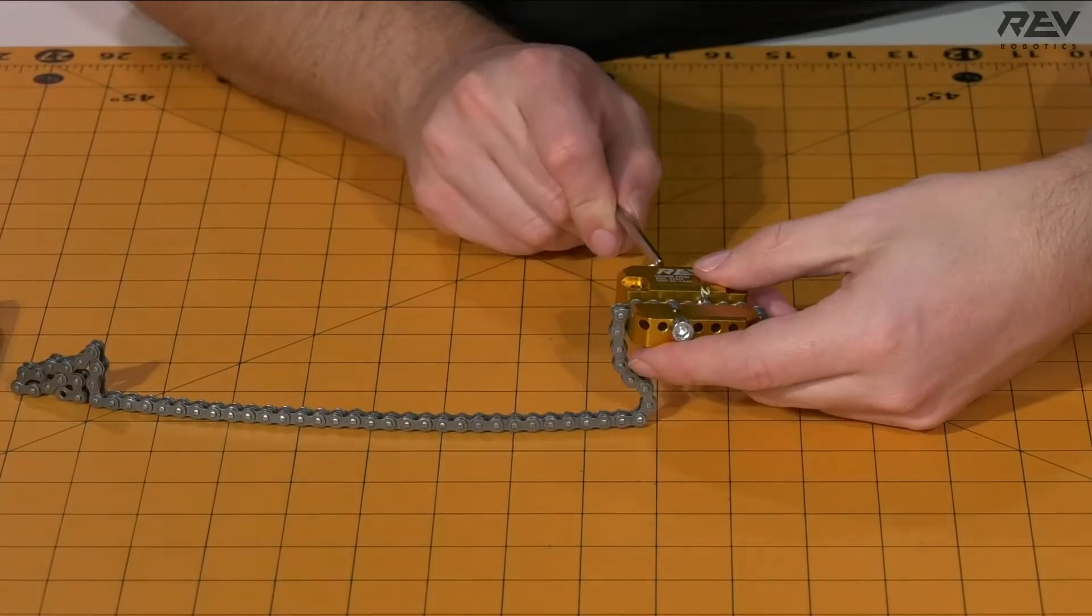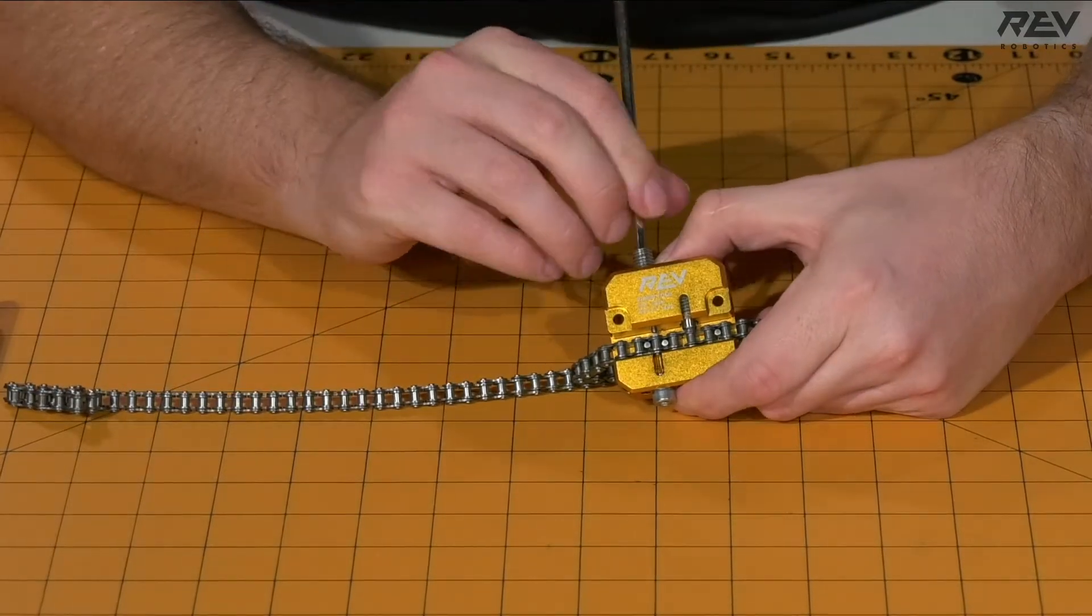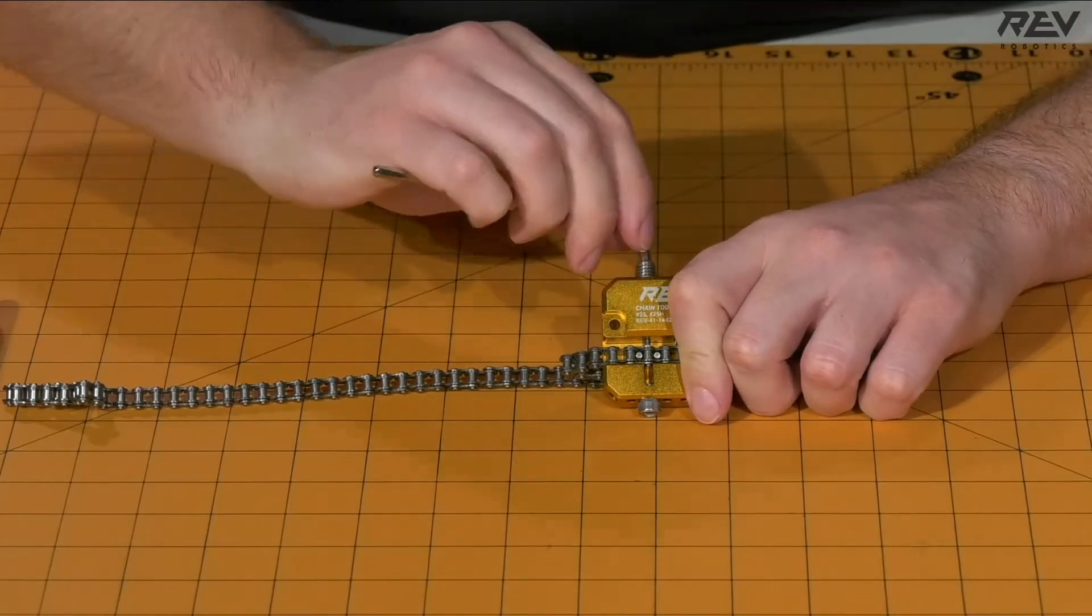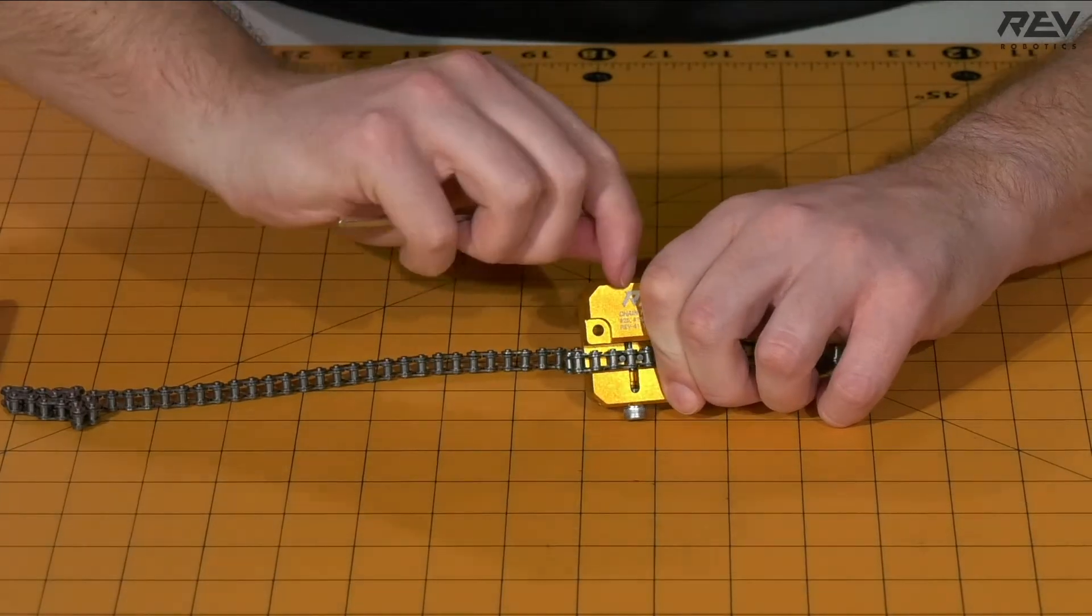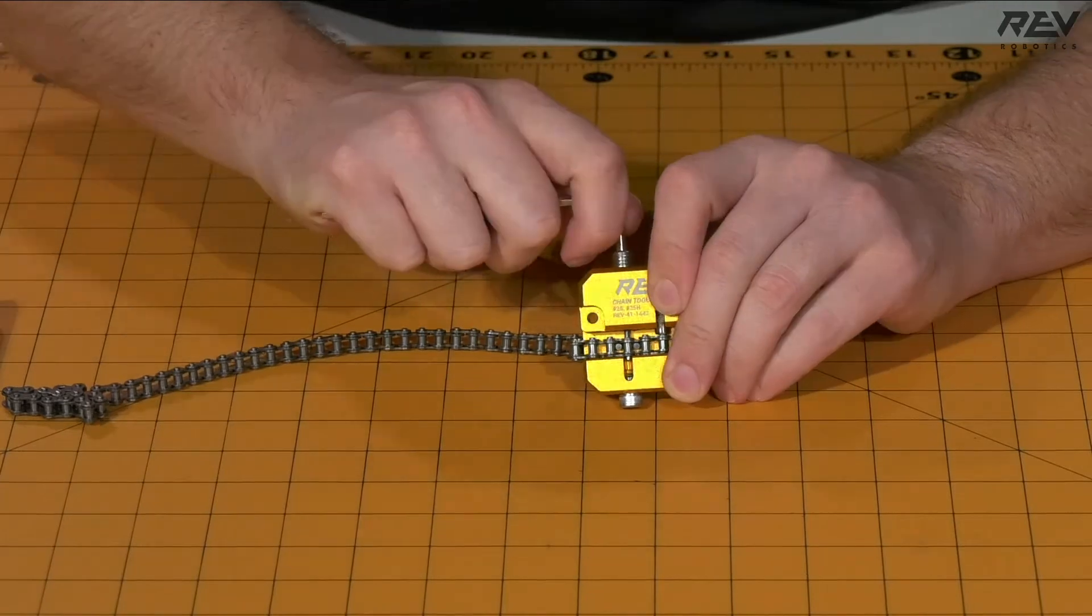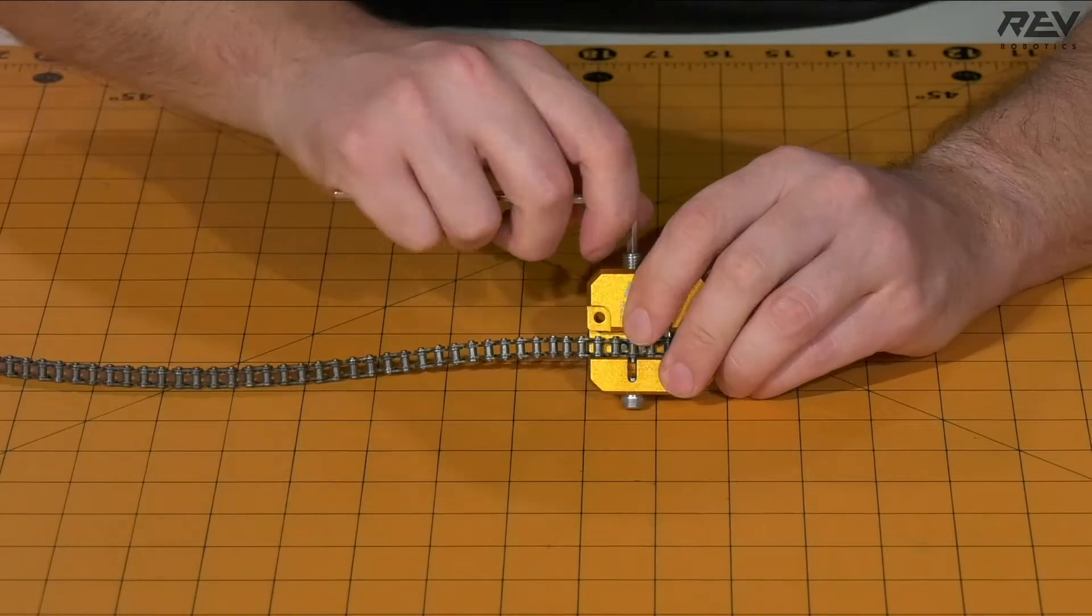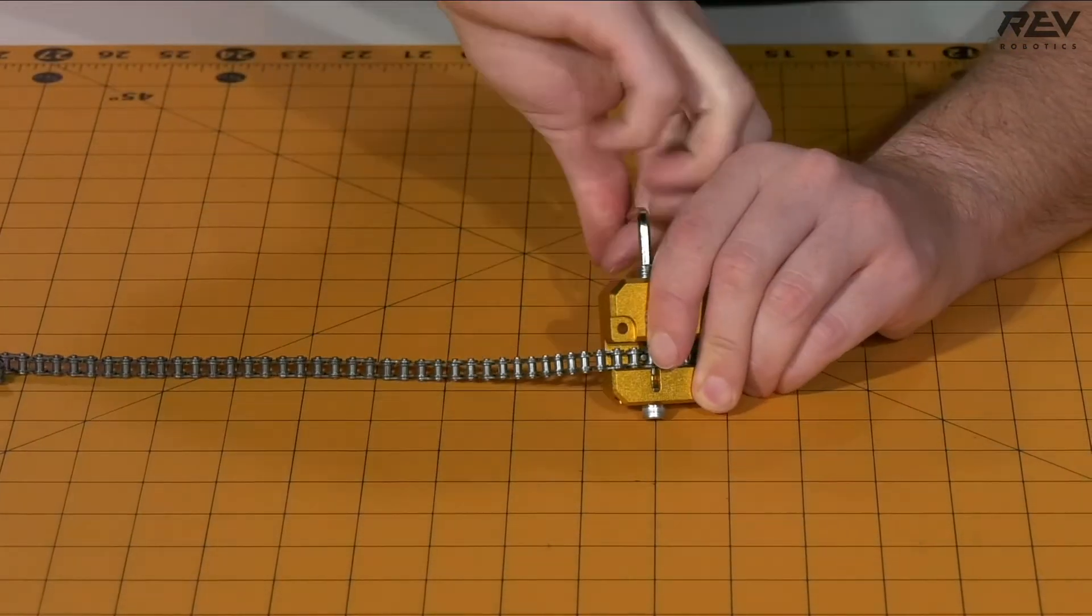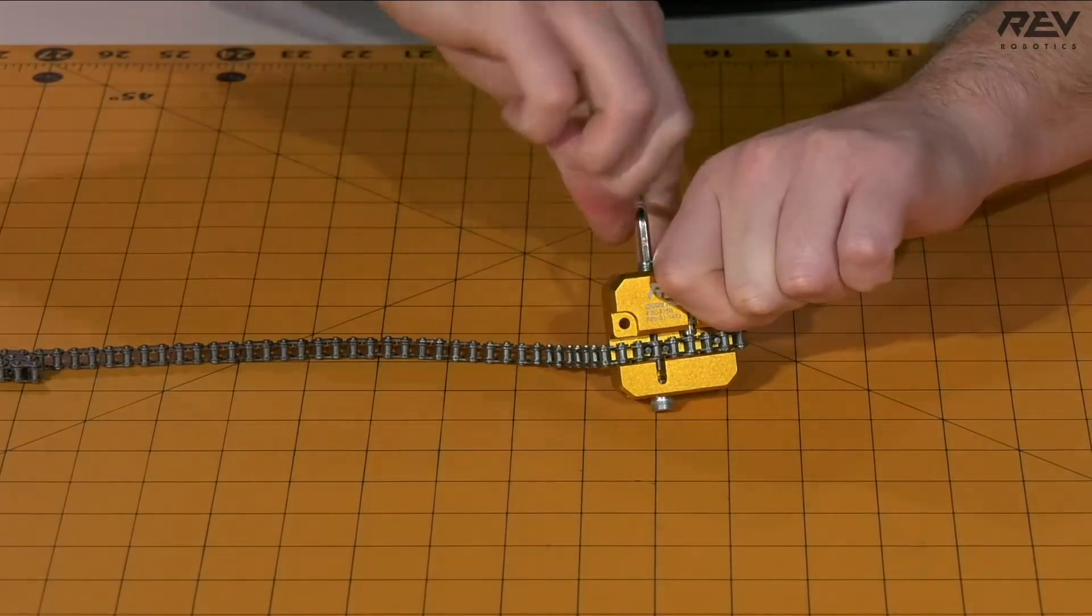Now you're going to take your pin screw and you want to basically set that through and slowly crank this down. This part is going to take a little bit of torque to be able to move the pin through and press it out of the chain itself. You want to do this nice and slowly, as if you push the pin all the way through, you will not be able to reseat the pin and you will need to use a master link.